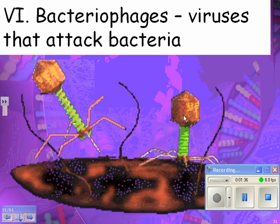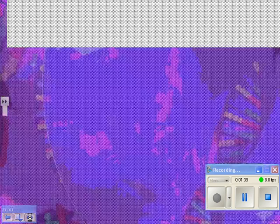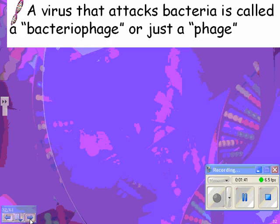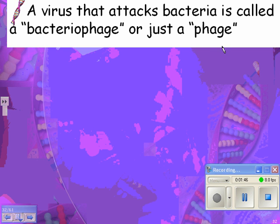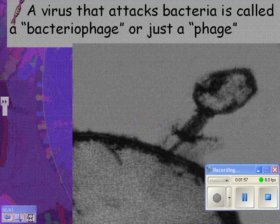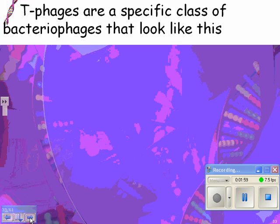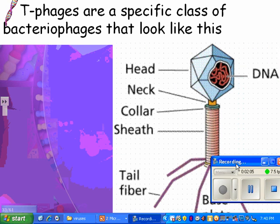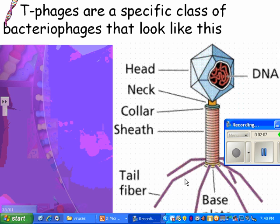A virus that attacks bacteria is called a bacteriophage, or phage. Here's a picture of it with an electron micrograph, which is a pretty amazing shot. T-phages are a specific class of bacteriophages that look like this. It's got its DNA and then it's got the protein around it. You don't have to memorize any of the parts — just remember that it looks like a needle.